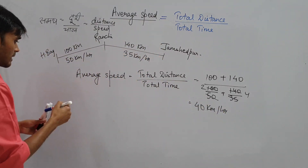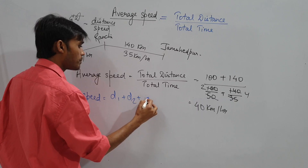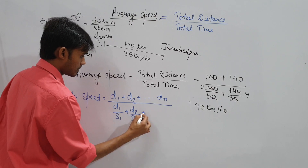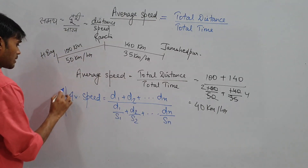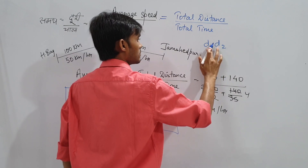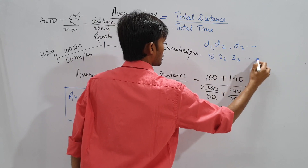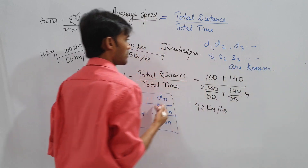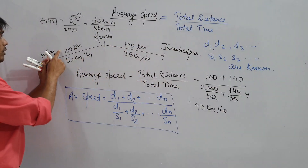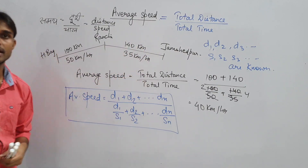From this we derive a formula: average speed equals D1 plus D2 up to Dn, divided by D1/S1 plus D2/S2 up to Dn/Sn — when D1, D2, D3 and S1, S2, S3 are known. Apply this formula when distances and corresponding speeds are given, as in this question: 100 km at 50 kmph and 140 km at 35 kmph.